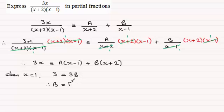And to get the value of A, what I do now is I make this bracket 0 by letting x equal minus 2. So when x equals minus 2, we have 3 times minus 2, which is minus 6. And that's going to equal minus 2 minus 1, which is minus 3, times A, that's minus 3A. And dividing both sides by minus 3 gives us A equals minus 6 divided by minus 3, which is plus 2.